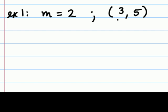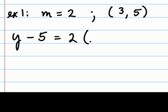If the slope is 2 and our line passes through the point (3, 5), we'll plug in these corresponding values into the appropriate place of our point-slope formula. That gives us y minus 5 equals 2 times x minus 3. Technically, this is the equation of a line that has a slope of 2 and passes through the point (3, 5).